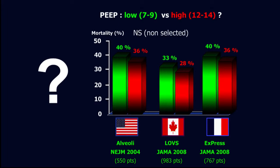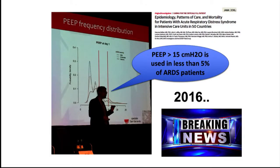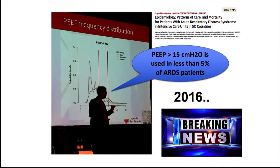We learn that we should change our paradigm and try to individualize the PEEP. In the recent epidemiological Lung SAFE study, we showed that high PEEP — meaning more than 15 cmH2O — is used in less than 5% of patients. The future could be to try to optimize and individualize PEEP for each patient.